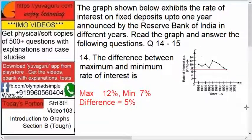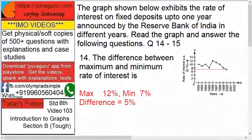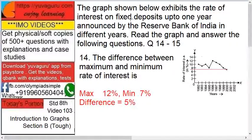On the y-axis it is interest rates and on the x-axis it is time. Now, what is FD and what is Reserve Bank of India? It's of no direct concern to you in this question, but I'll tell you — FD means fixed deposits. There are three types of deposits in banking: savings, current, and fixed.